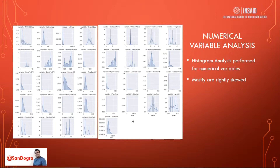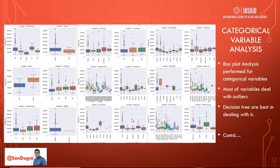We performed over 40 analyses on numerical variables — most of the data was right-skewed. For categorical variables, we performed over 60 analyses using box plots. Most categorical variables had outliers to deal with. These outlier factors can be handled by the model — particularly a decision tree model.